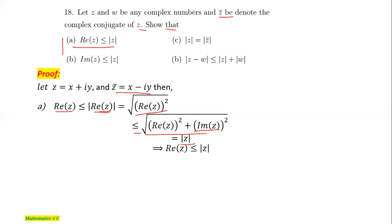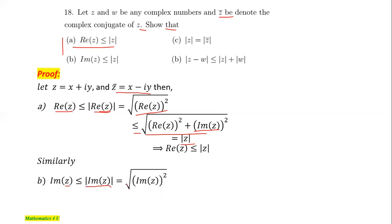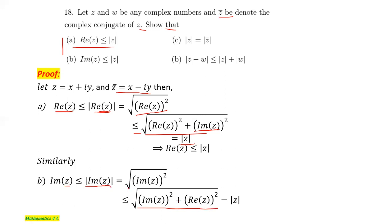For part b, we show Im(z) ≤ |z|. Similarly, the imaginary part of the complex number satisfies |Im(z)| = √(Im(z)²). If we add the square of the real part, the expression only increases, so √(Im(z)²) ≤ √(Re(z)² + Im(z)²) = |z|. Therefore the imaginary part of a complex number is less than or equal to the norm of the complex number.